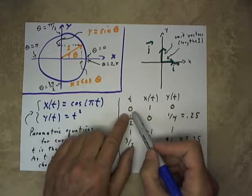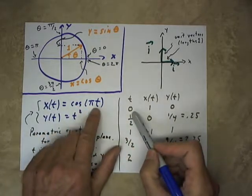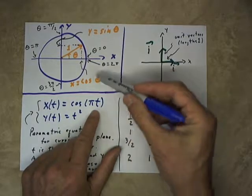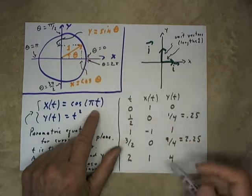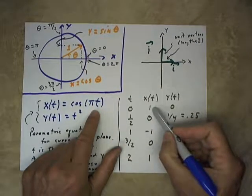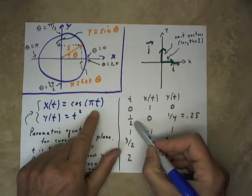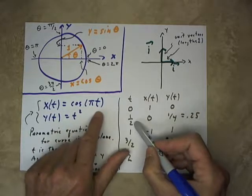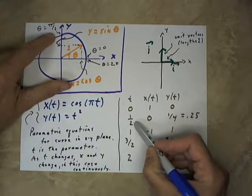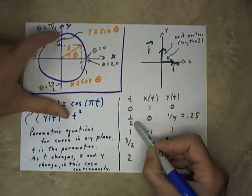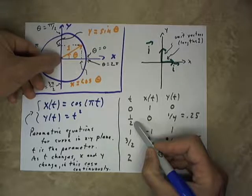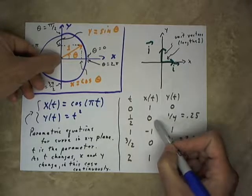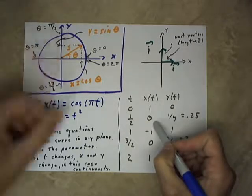If t equals 0, then the cosine of πt is the cosine of π times 0, and the cosine of 0 is the x-coordinate at this point, and that's just 1. If you go to 1/2, then you have the cosine of π times 1/2. Well, π times 1/2 is π/2, and the cosine of π/2, if we take this point and project it down to the x-axis, we see that the cosine is 0, so x(t) will be 0.